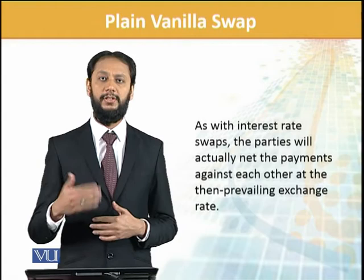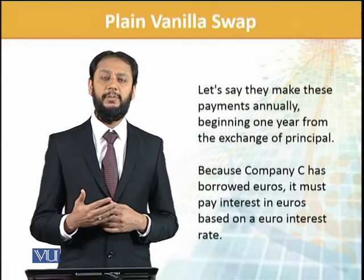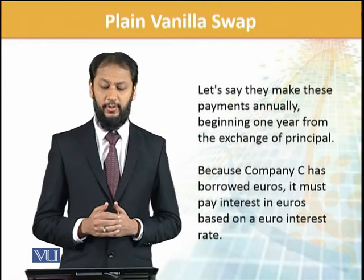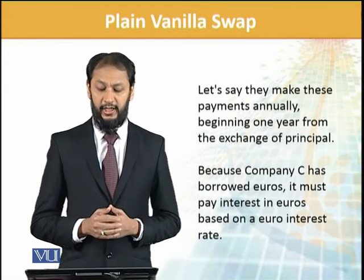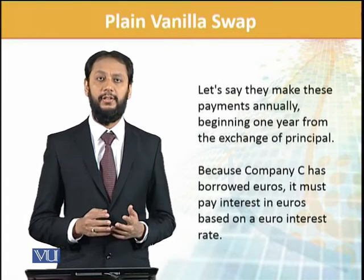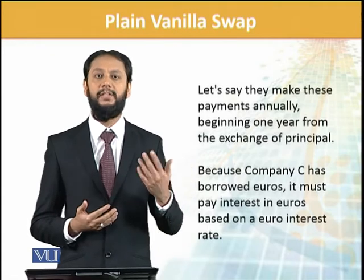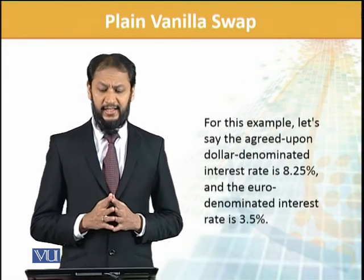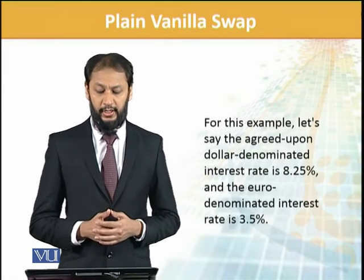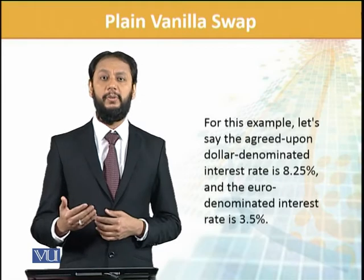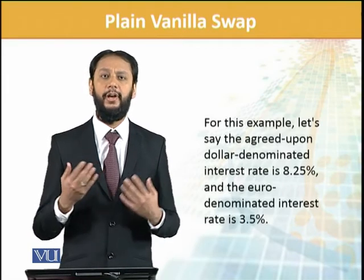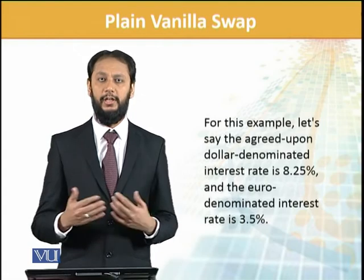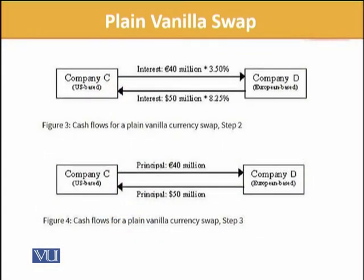Exchange rates will drive further movement. It is also possible that they make payments in their respective currencies annually, beginning one year from the exchange of principals. Since Company C has borrowed euros, it must pay interest in euros based on euro interest rates. Each company's borrowing rate differs by country. The agreed dollar rate is 8.25% and the euro-denominated loan rate is 3.5%. These rates are given in the data and we will apply them.